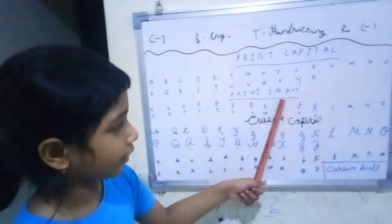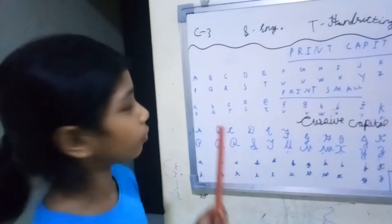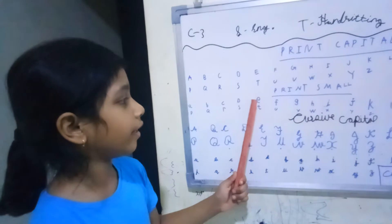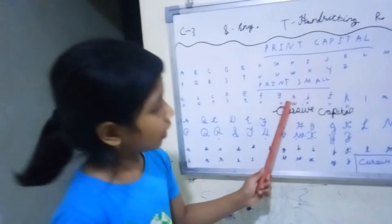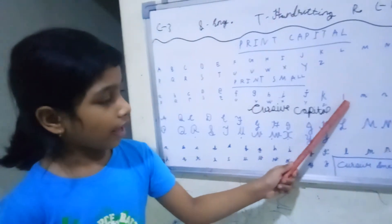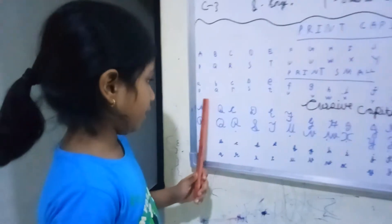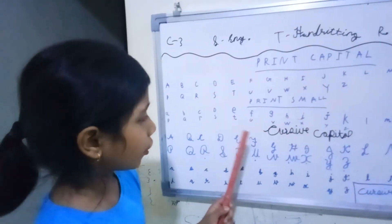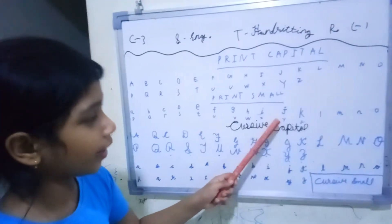It is also like print capital ones: a, b, c, d, e, f, g, h, i, j, k, l, m, n, o, p, q, r, s, t, u, v, w, x, y, and z.